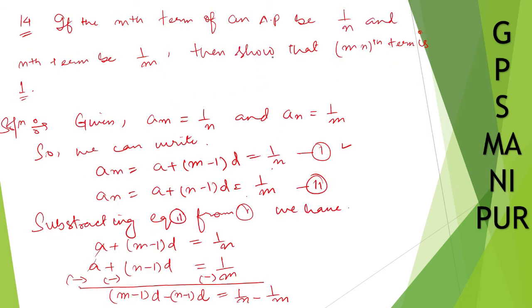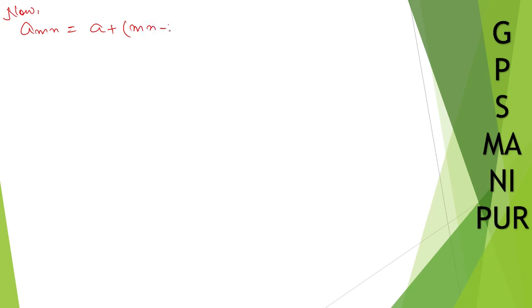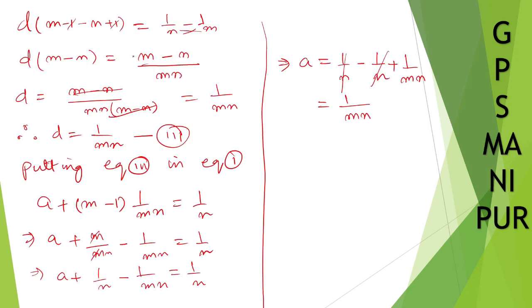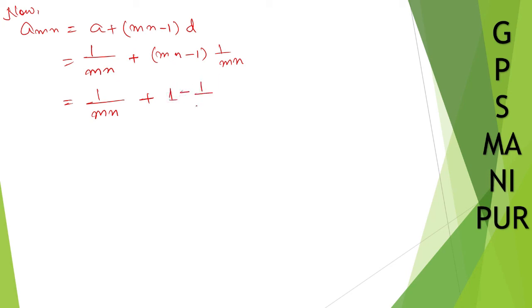The question asks us to show that the mnth term is 1. So a_mn equals a plus (mn minus 1)d. We know a equals 1/mn and d equals 1/mn. Substituting: 1/mn plus (mn minus 1) times 1/mn equals 1/mn plus mn/mn minus 1/mn. The 1/mn terms cancel and mn/mn equals 1.